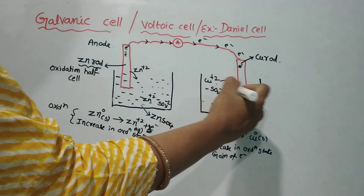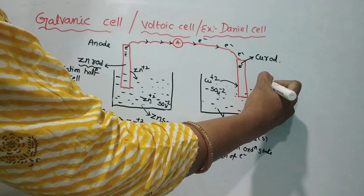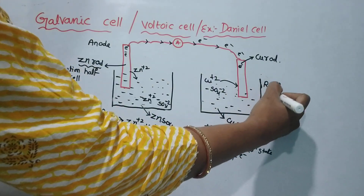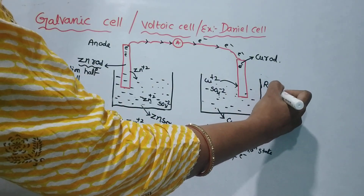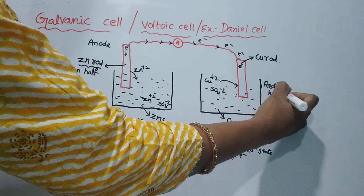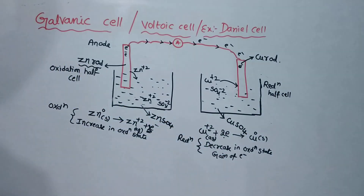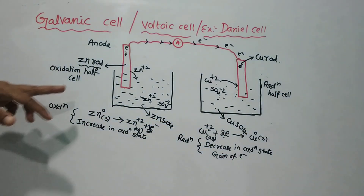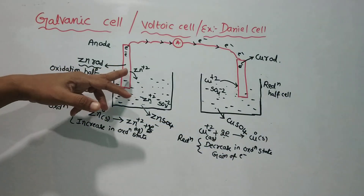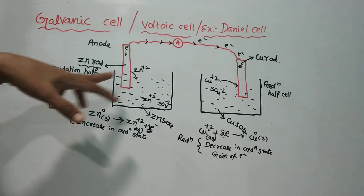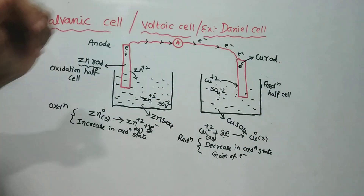So we have here the oxidation half cell on the left side and the reduction half cell on the right side.